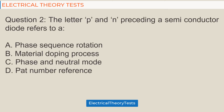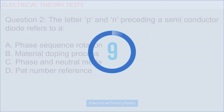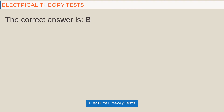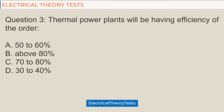Question 2: The letters P and N preceding a semiconductor diode refer to — a) phase sequence rotation, b) material doping process, c) phase and neutral mode, d) part number reference. The correct answer is b) material doping process.